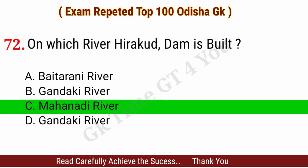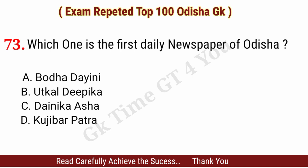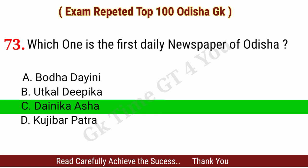Question number seventy-three: Which one is the first daily newspaper of Odisha? Right answer, option C: Dainika Asha.